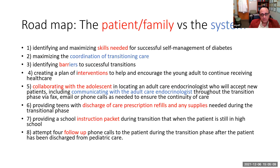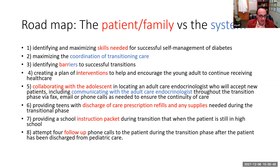The roadmap addresses both the patient and family and the system. First, we need to understand and maximize the skills related to successful self-management of diabetes. Then we need coordination of the transition of care — identifying people in the adult care system at the other end of the spectrum, understanding the barriers from both the patient side and the system side, and creating a plan of intervention to encourage the young adult to begin the transition of care.